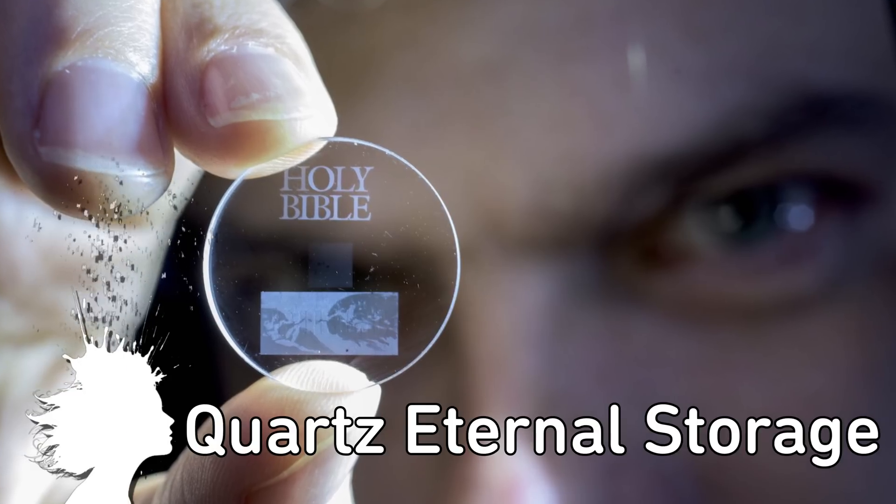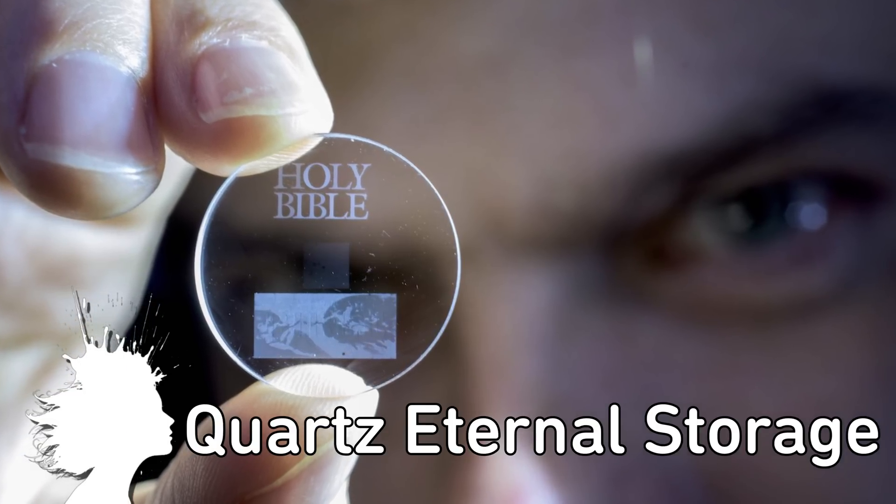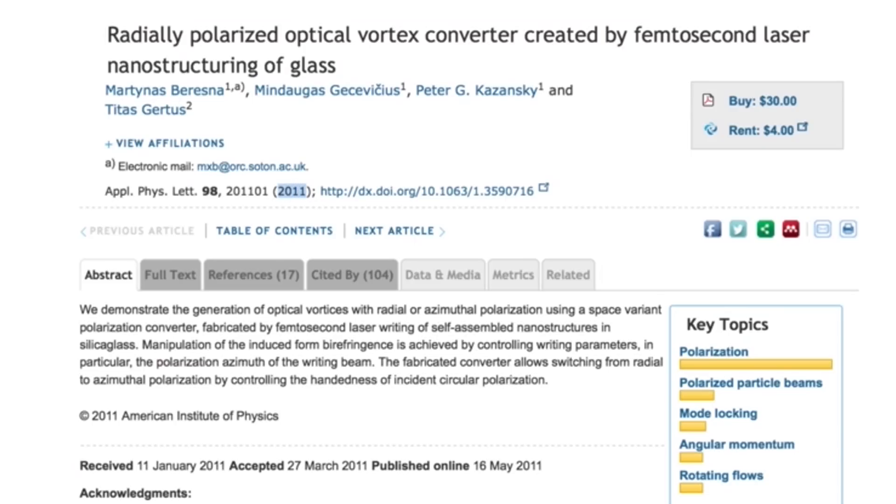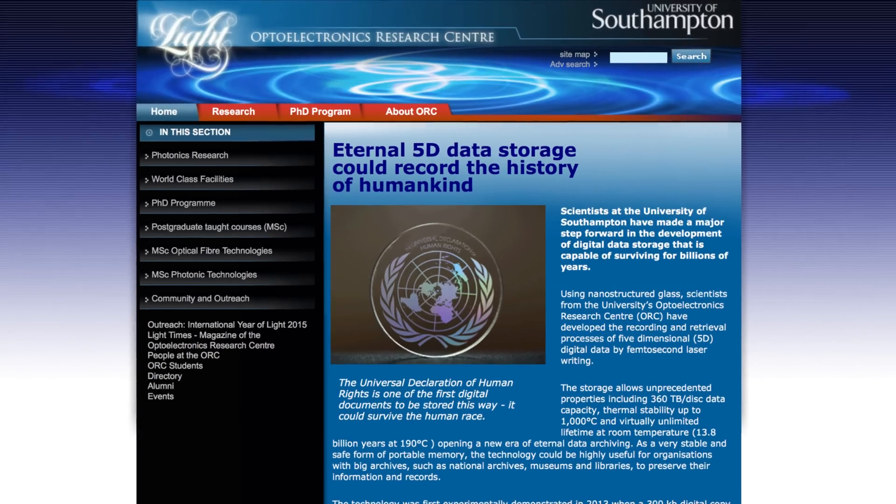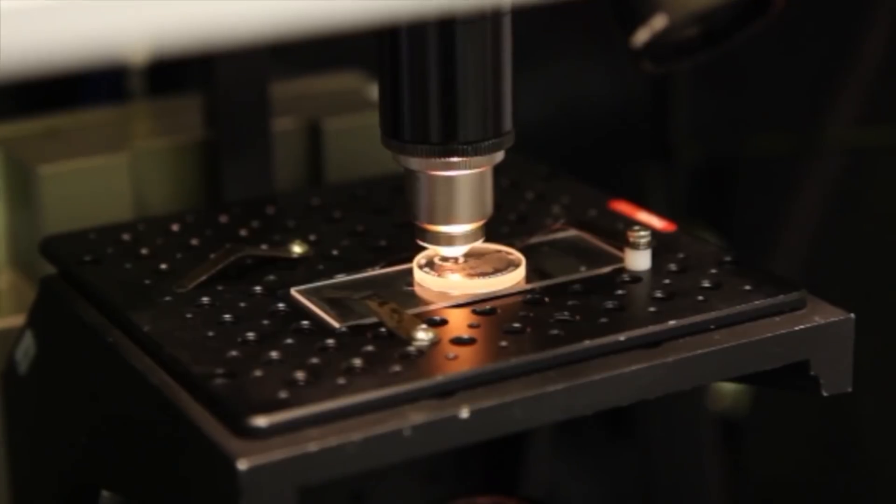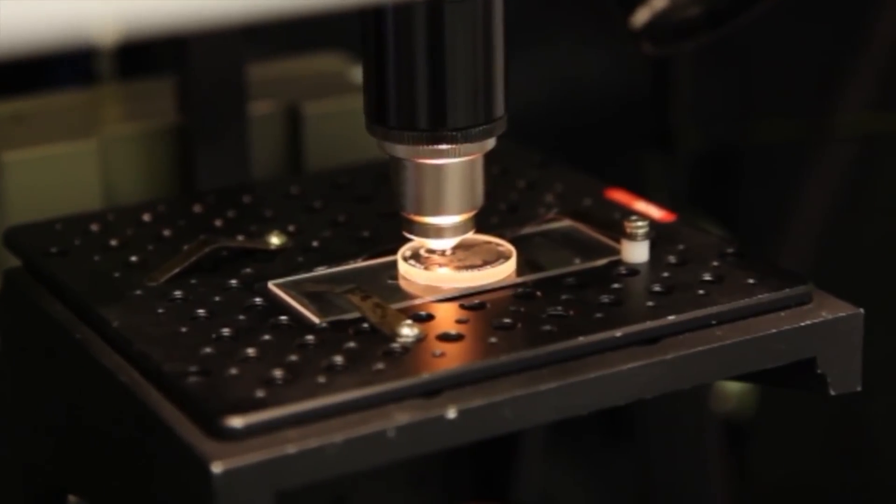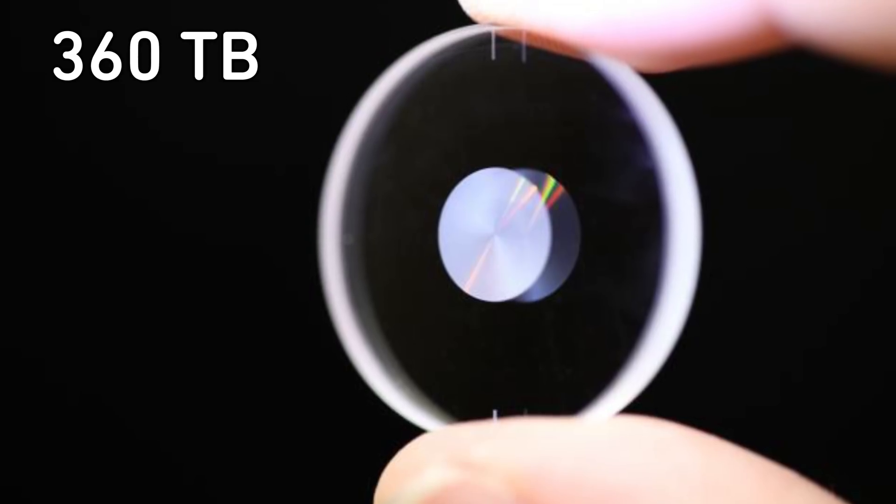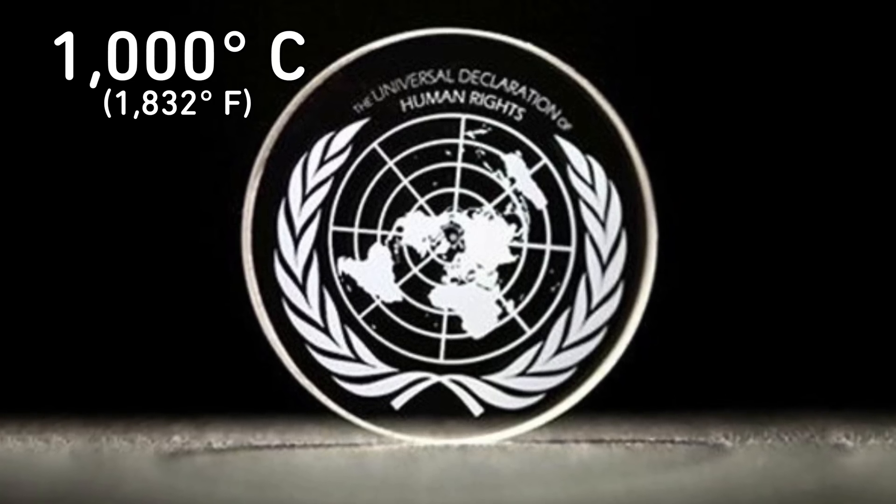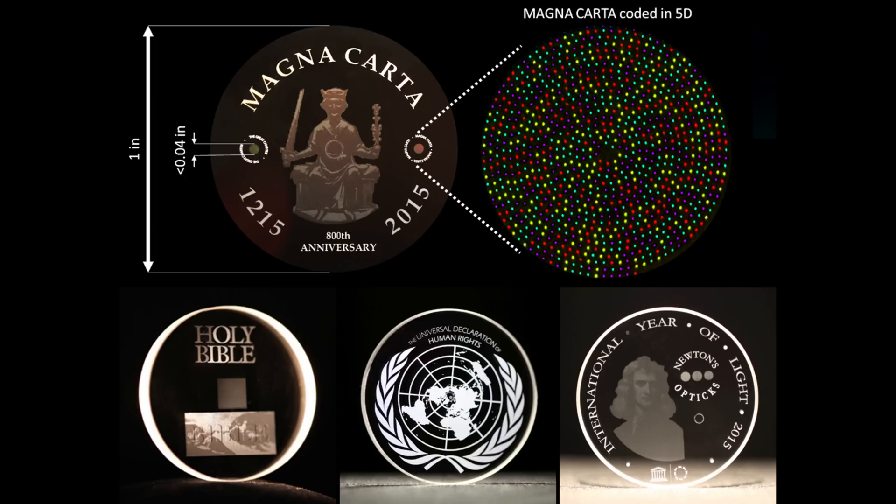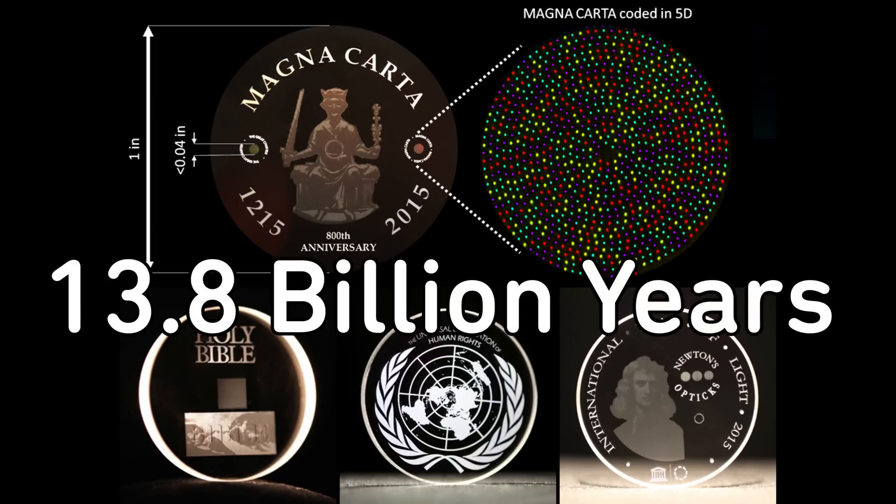Tiny Quartz Discs could store data for billions of years. First detailed in 2011, it stores data via laser-etched nanostructures which can be read by passing light through the crystal and having an automated microscope algorithm translate the light changes. The UK researchers now have a working prototype and the next step is to speed up the write time as well as the read time of the discs that can store 360 terabytes, can withstand temperatures up to 1000 degrees and have a room temperature lifespan of 13.8 billion years.